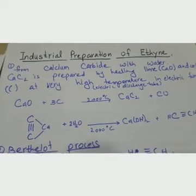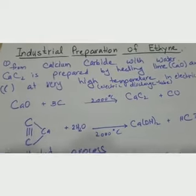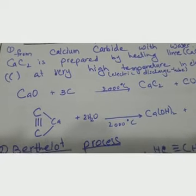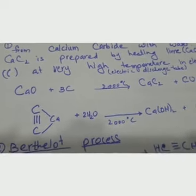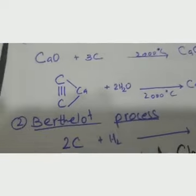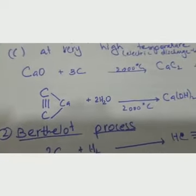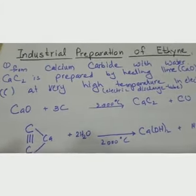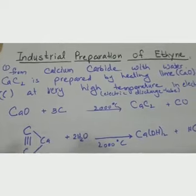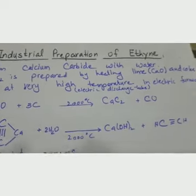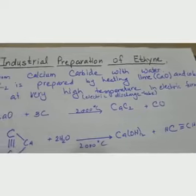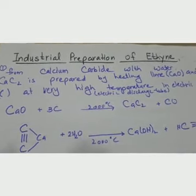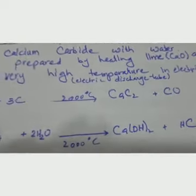Now we will see how calcium carbide is prepared. Calcium carbide is CaC2 — calcium has a valency of +2, so two carbons are attached to it, with a carbon-carbon triple bond, and both carbons are attached to calcium. Calcium carbide is prepared by mixing calcium oxide (lime) and carbon (coke), then heating to very high temperature in an electric furnace.